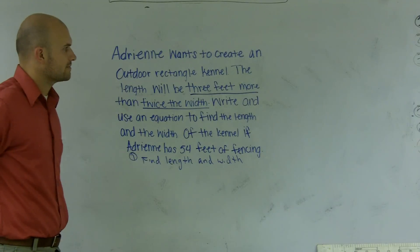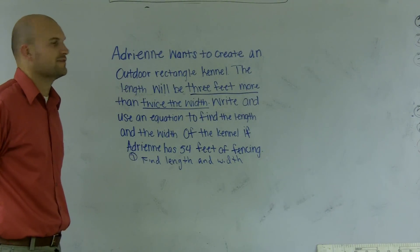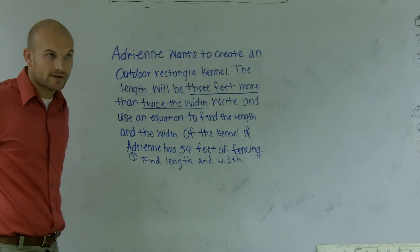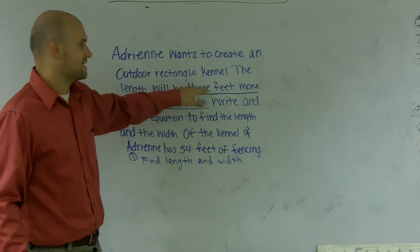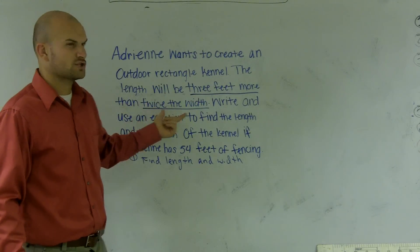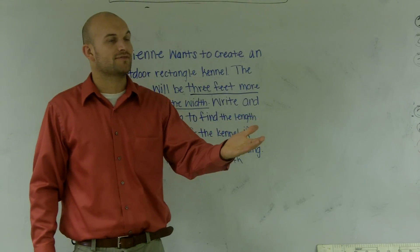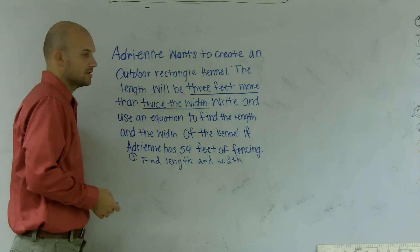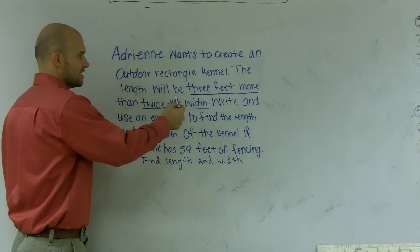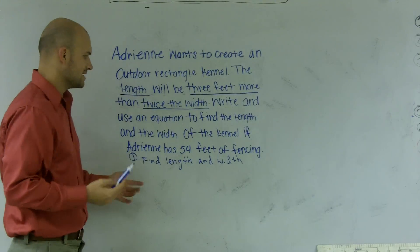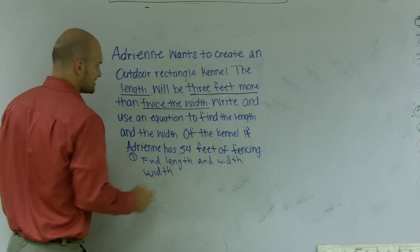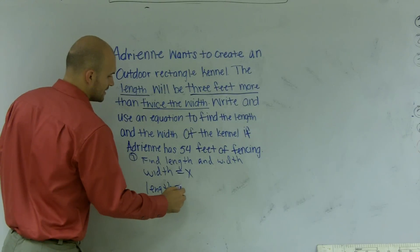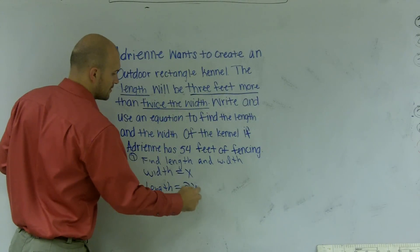What does 'three feet more' mean? If I'm three years older than you, what would you do to your age to get mine? You'd add three. So whatever the width is, I'm going to have to add three. Then it says 'twice the width' — if you have twice as much money, you multiply by two. So you need to twice the width and then add three to get the length. I don't know what the width is, but since I'm doing all this to the width to get the length, let me say the width equals x and the length equals 2x plus three.